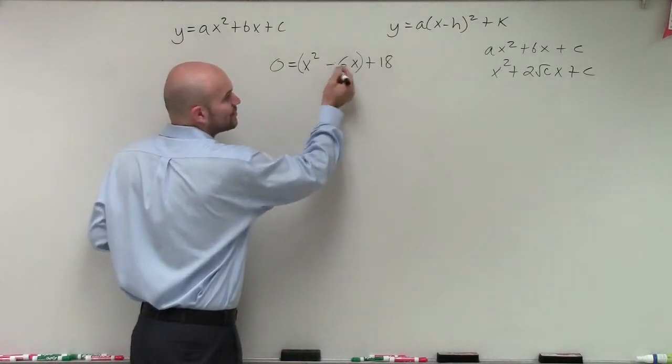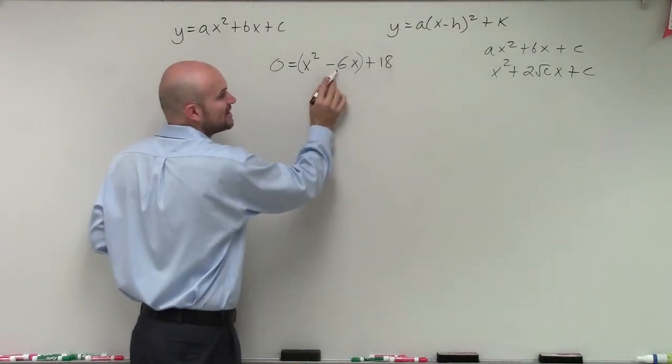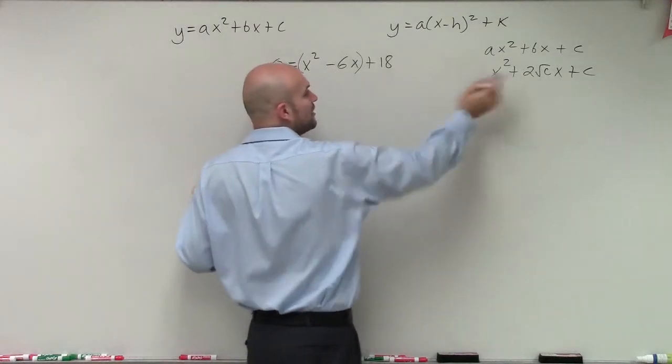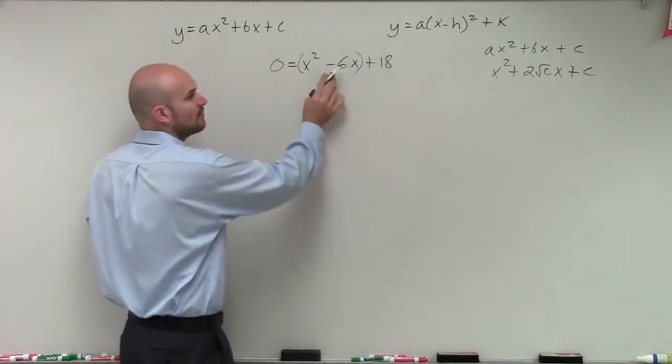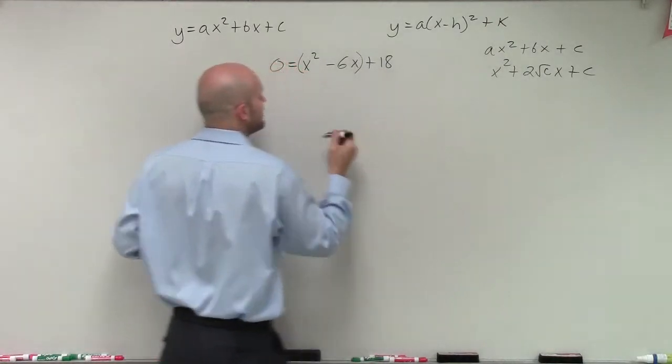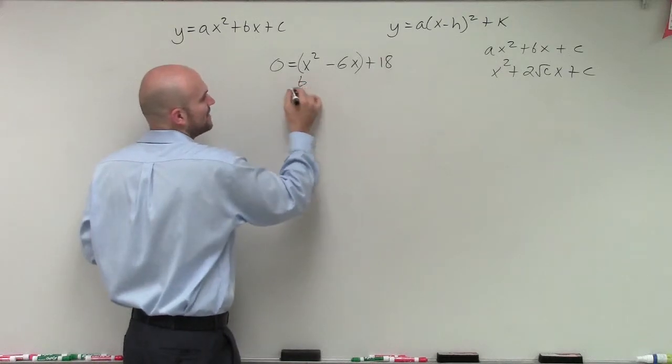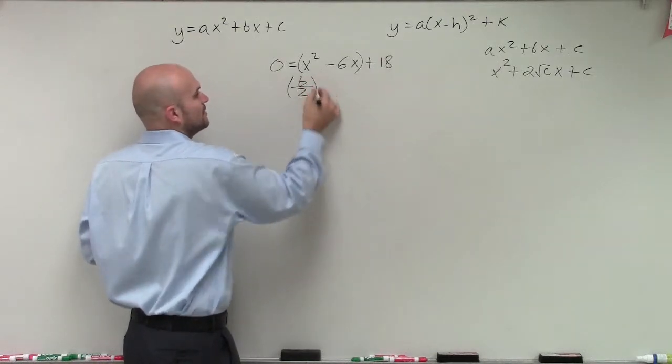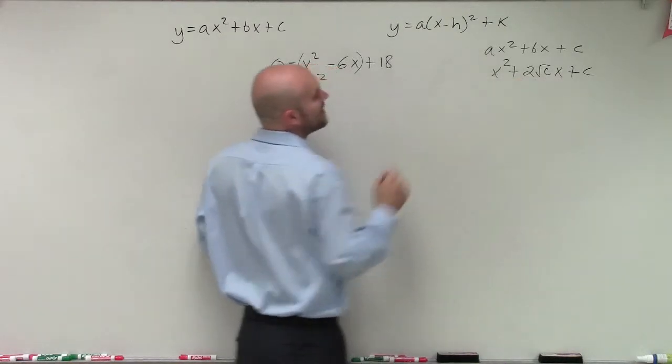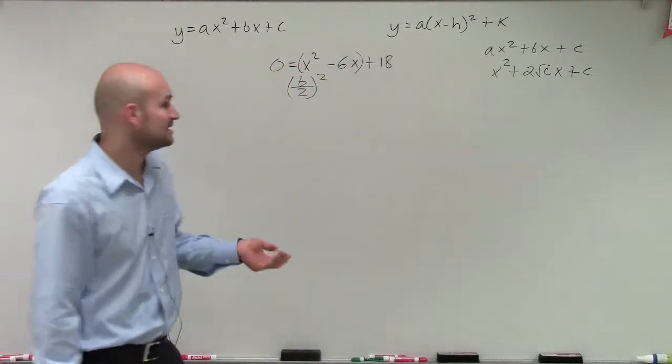So I need to create a perfect square trinomial. Now notice, if this is a perfect square trinomial, this number has been multiplied by 2 and then taken the square root. So what I'm going to do to create my perfect square trinomial is I'm going to do the exact opposite operations. I'm now going to take my b, divide it by 2, and then square it, pretty much undoing all of this to find the value of c that's going to complete the square.